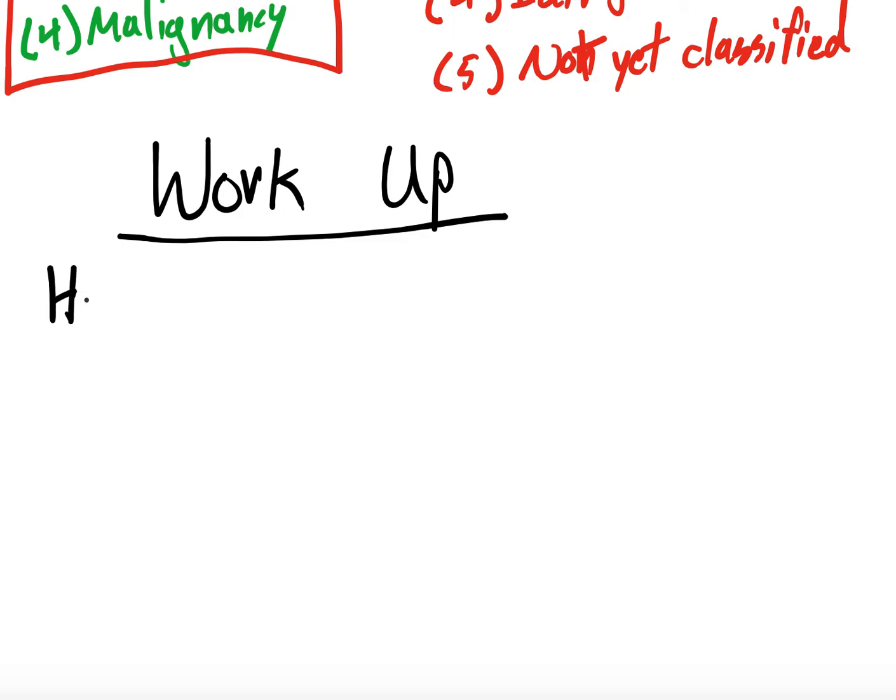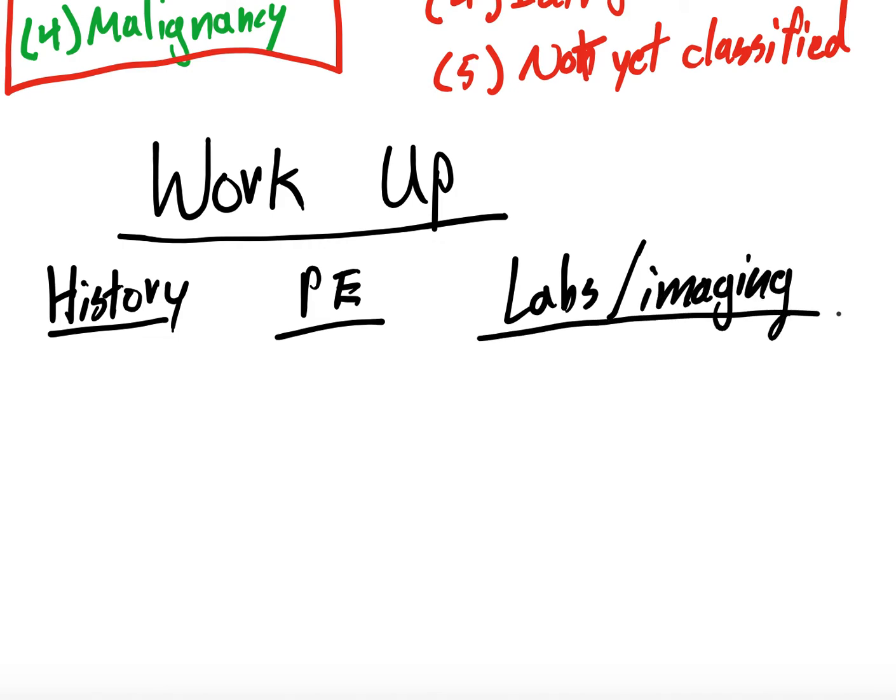So, workup. As with any workup, we need history, right? We need physical exam, and we need labs and imaging. So, if you think about the differential, you know, anytime you're doing a history, physical, labs, and imaging, you're kind of thinking about what your big, broad differential is, and then you're figuring out pre-test probability using the history and physical, that will then guide what labs and imaging you want.